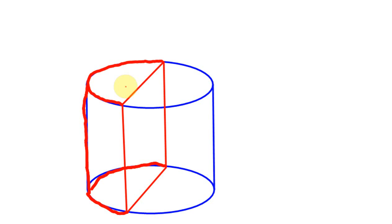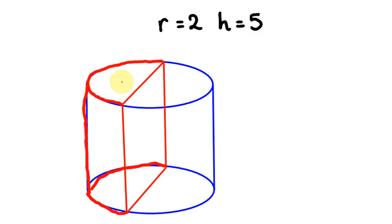Let's work out the different parts. I'll give some arbitrary dimensions — the two measurements we need are a radius and a height. I'll say radius equals 2 and height equals 5, in centimetres, metres, whatever. Now I'll number the sides: side 1 is the half circle on one end, side 2 is the rectangular face, side 3 is the identical half circle on the other end, and side 4 is the semicircular curved surface.